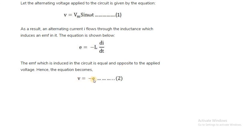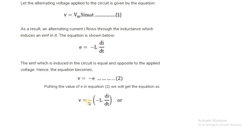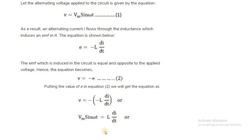V is equal to minus E, where E is equal to minus L di by dt, so that V equals minus of minus L di by dt, which gives V equal to L di by dt. Since V equals Vm sin omega t, the applied voltage Vm sin omega t equals L di by dt. From this, we want to find out the equation of the current flowing through the circuit.